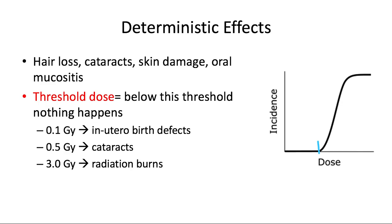Some examples of threshold doses: at 0.1 grays (100 milligrays), we start to see in utero birth defects; at 0.5 grays, cataracts can happen; and at 3 grays, radiation burns, hair loss, sterility, and other effects can occur. Dental x-rays are way down in the micro grays, so for dental radiographs, we do not need to worry about deterministic effects — we're far away from the threshold dose for any of these potential effects.